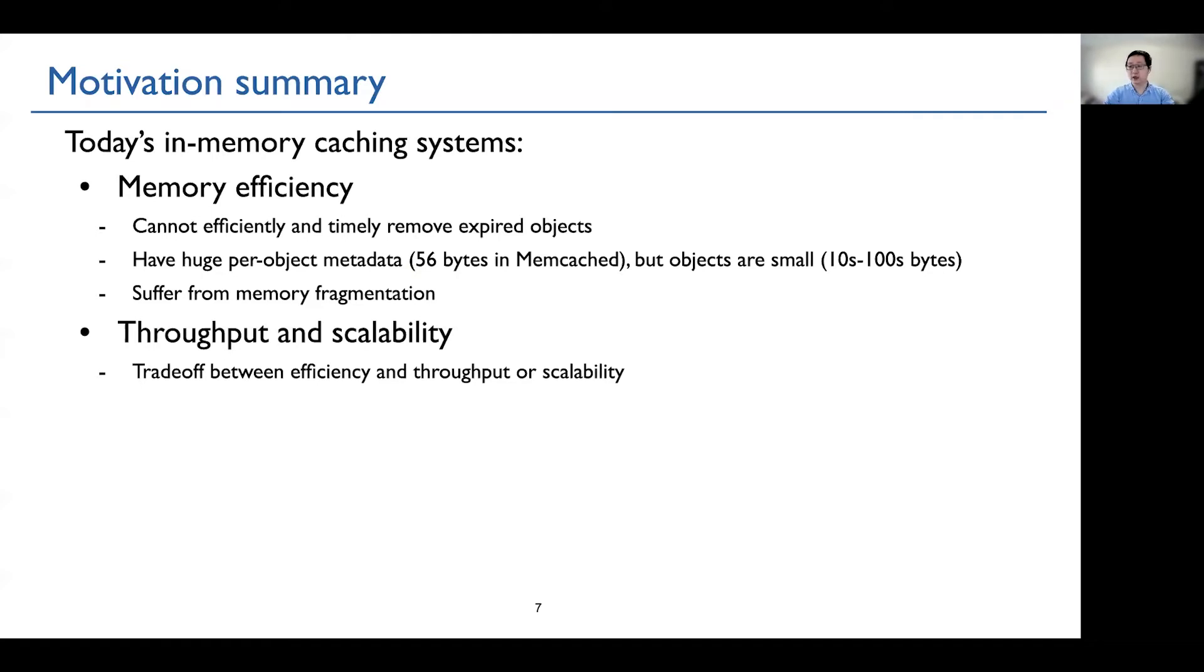While objects are usually small, from tens of bytes to hundreds of bytes. Further, they suffer from memory fragmentation, and it wastes huge precious cache space on memory fragmentation. So that's memory efficiency.